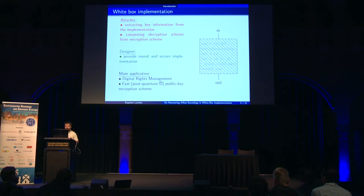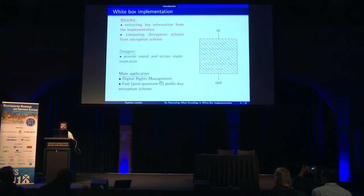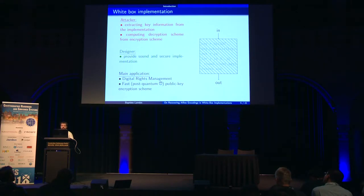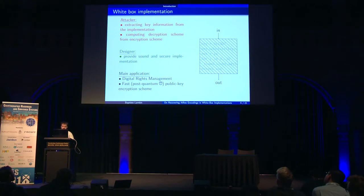The attacker has two goals: either to extract some key material — the best way to attack — or to compute the inverse of the function. For example, if you're given a white box implementation of an encryption, you want to get the decryption scheme while you're not allowed to. The main application of this is digital rights management, because you need to do some decryption on the client side. You can also think of it as some form of post-quantum public key encryption, where your implementation is your public key.